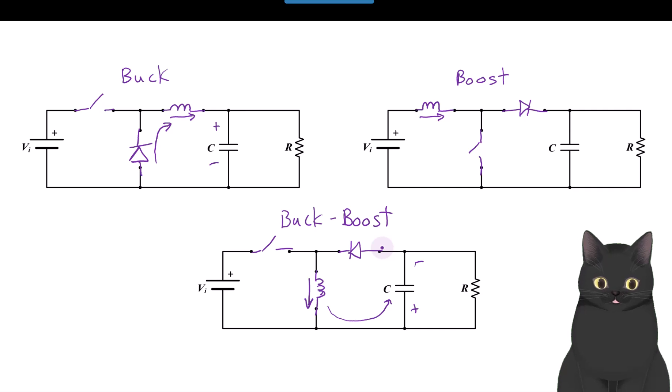Using that, we can remember that the inductor location is going to be different for each of them. For the buck, inductor is at the output. For the boost, inductor is at the input. For the buck boost, the inductor is in the middle going downwards. From that, you can figure out your switch locations and then you have your topologies for the buck, boost, and buck boost. Have a great day.